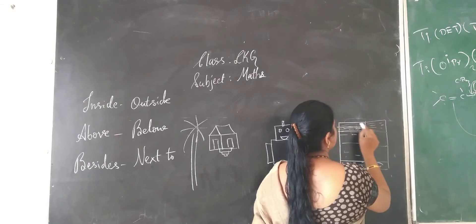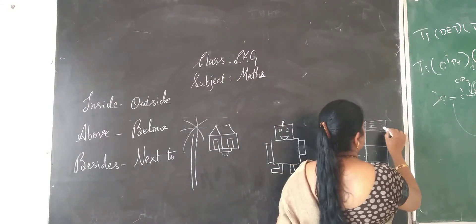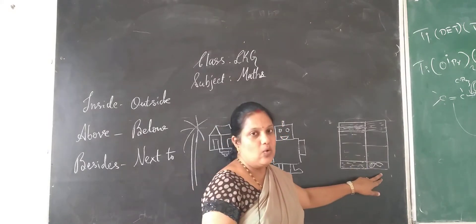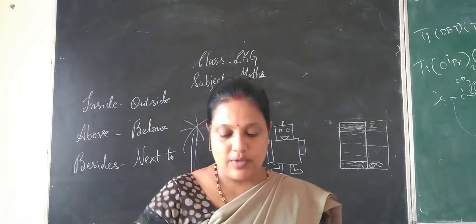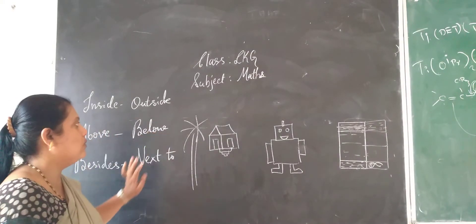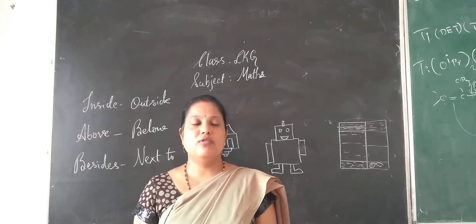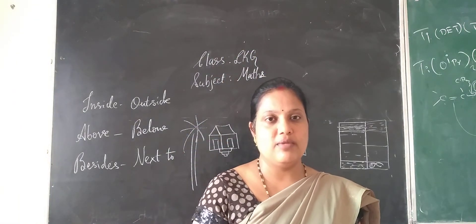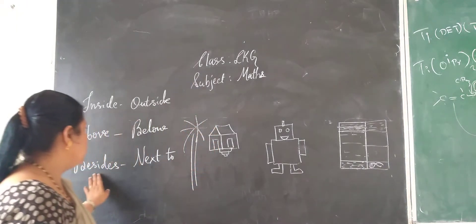Above is the higher position and below is at the bottom or down. That is how you can tell above and below. For example, above the shelf and below the shelf, or above the tree and below the tree. Almost all the birds are above the tree, while below the tree you can find walking animals like cows and goats.